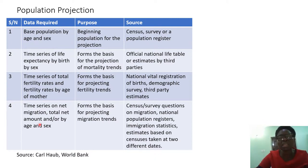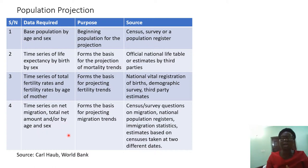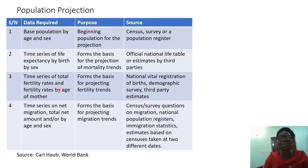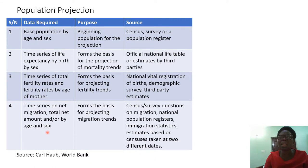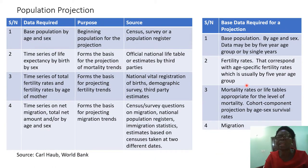The next data required is a time series on net migration — total net amount and/or by age and sex. This table is drawn from a World Bank resource. So, to summarize: you look at base population by age and sex, life expectancy, fertility rates, and total migration.